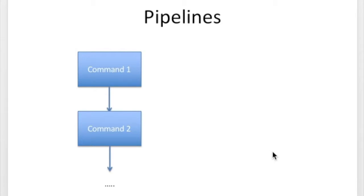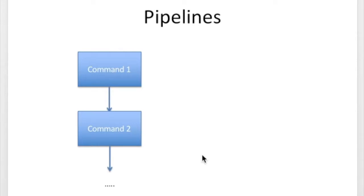Many BioWolf users have the need to run what are called pipelines. A pipeline is a series of commands where command 1 might create some output and that serves as the input for command 2. You could put all these commands into a script and the script would work through command 1, create the output, then run command 2, and so on.